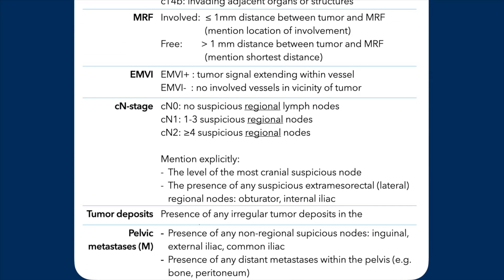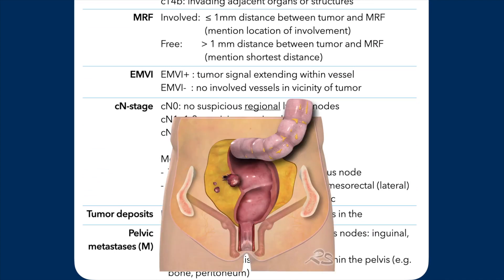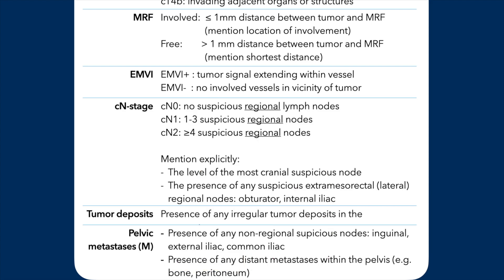Then we have the mesorectal fascia, which is very important because in standard rectal cancer surgery, the surgeon performs the total mesorectal excision (TME) along the mesorectal fascia. So when the mesorectal fascia is involved, you cannot operate and need to do neoadjuvant therapy. Then we're going to talk about EMVI — extramural vessel invasion — and the lymph node stage.